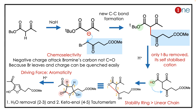Then the anion attacks the bromine — you have a new C-C bond formed. Then you are doing hydrolysis; hydrolysis converts the ester to an acid. Then you have an internal nucleophile, so it attacks the carbonyl and you get a new five-membered ring with an ester.